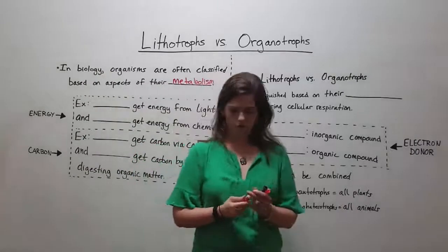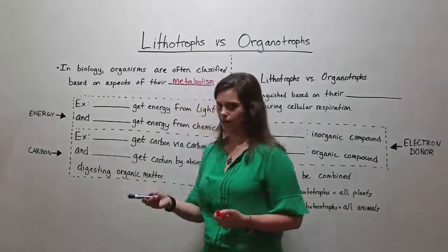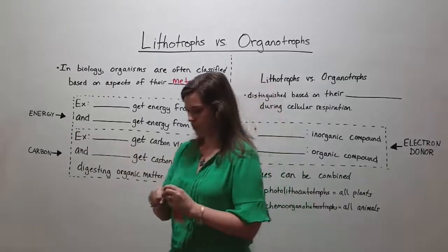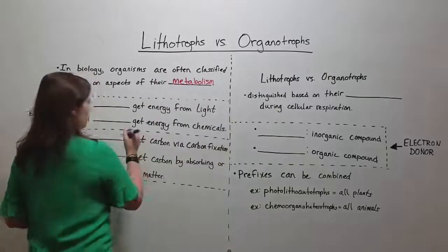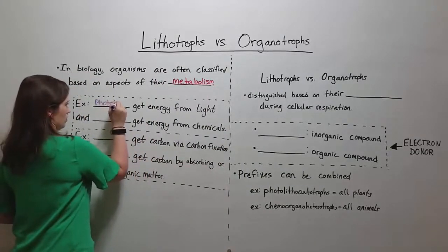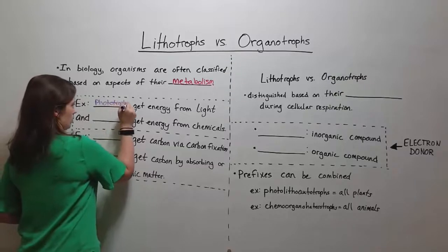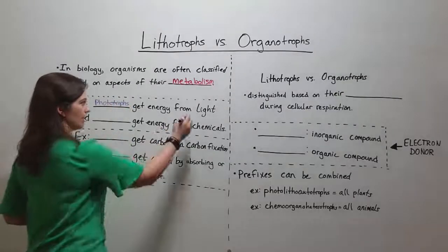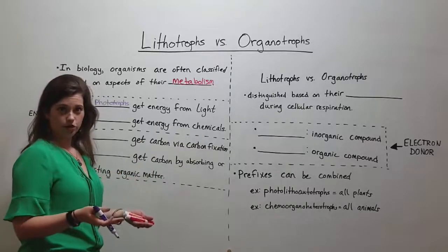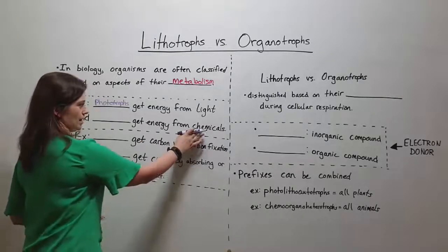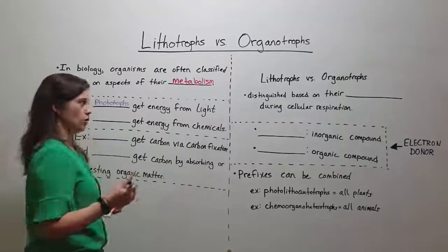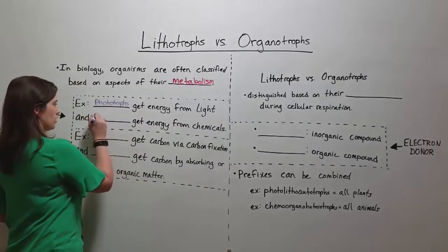For example, organisms can be classified on how they get their energy. There are certain organisms that would fall into the classification of phototrophs, who get their energy from light, and then other organisms that don't get their energy from light but who get their energy from breaking down chemical compounds and releasing energy from those chemical bonds. Those are known as chemotrophs.